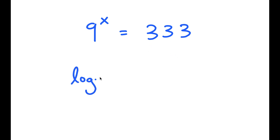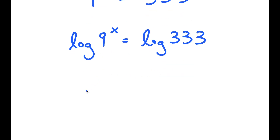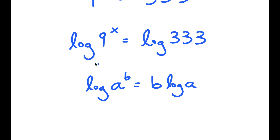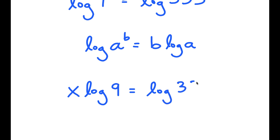From here, I'm going to take the log on both sides. So I get log 9 to the power of x is equal to log 333. And if I have something in the form log a to the power of b, this is equal to b times log a. So log 9 to the power of x — I can move x to the front — giving x times log 9 is equal to log 333.